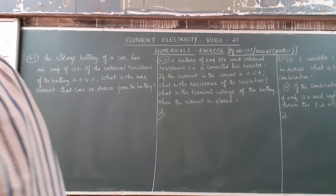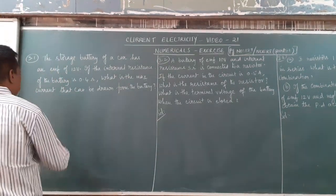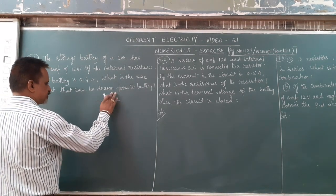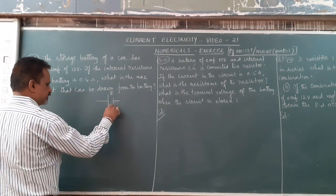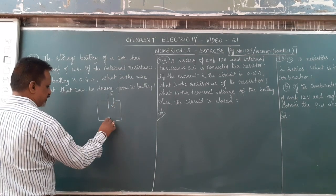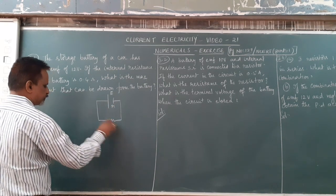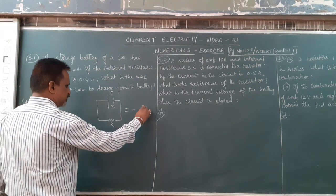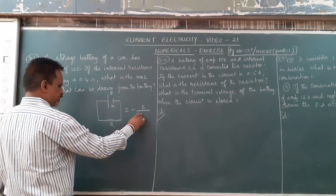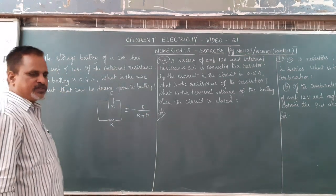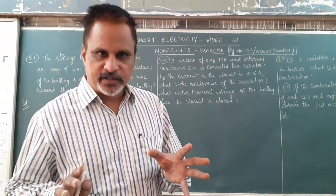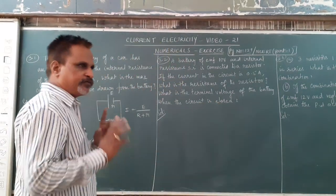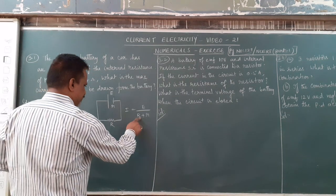They are asking maximum current. Generally, when a battery has an internal resistance, this is the battery and this is internal resistance. It is connected across any external resistance capital R. The equation for the current becomes E by the total resistance.